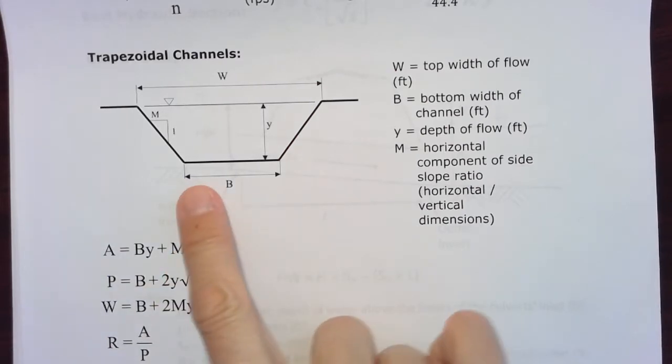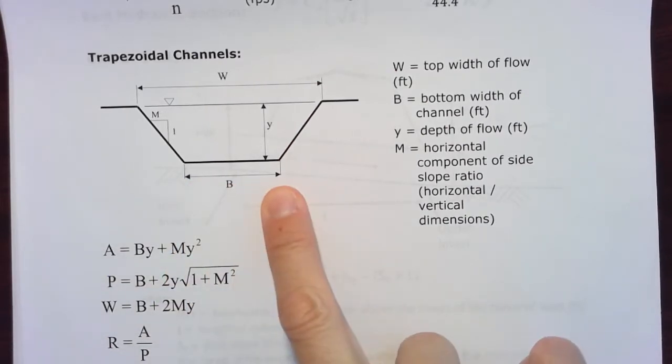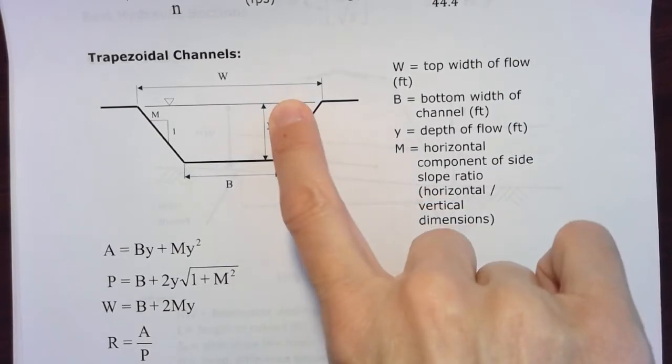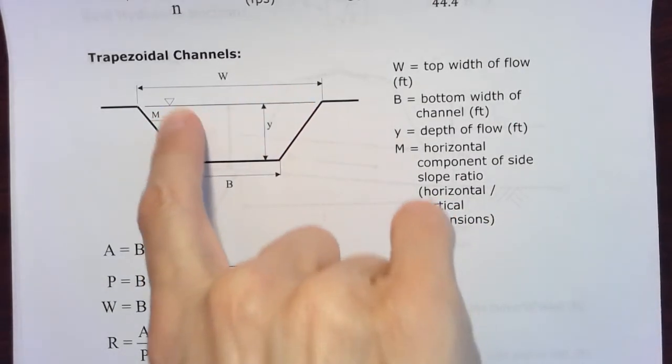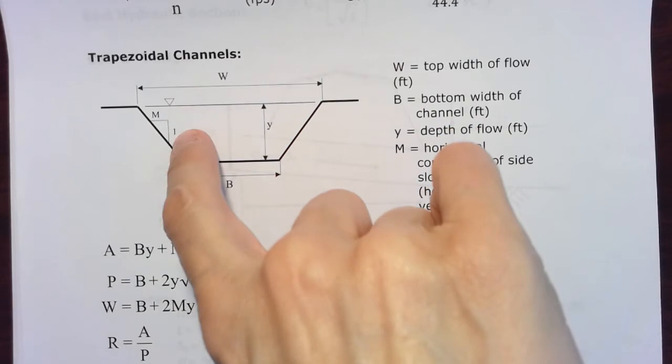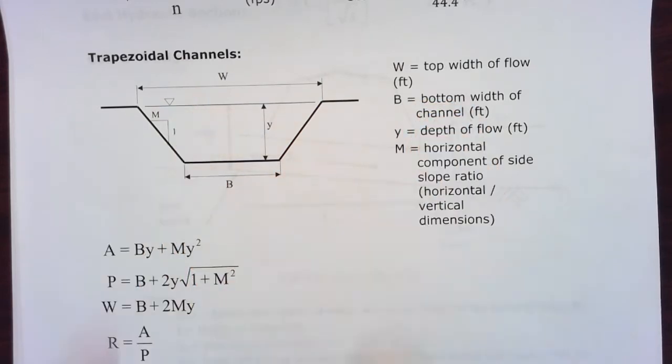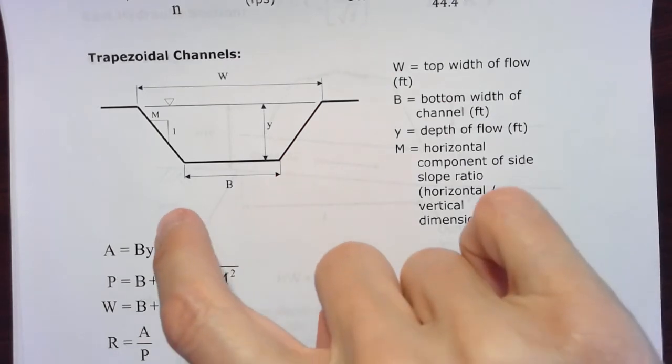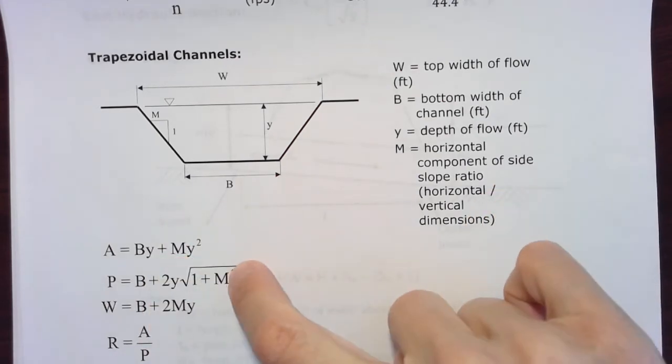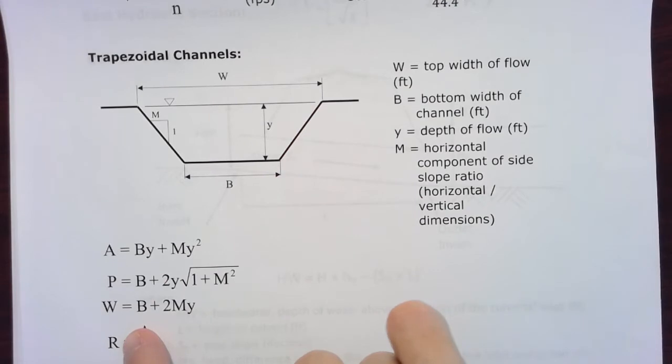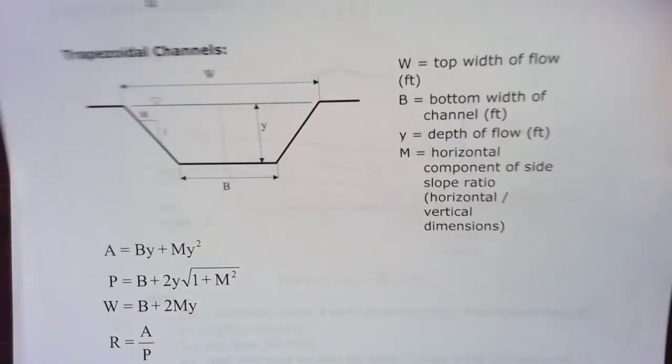When we define things, we can define the base of the channel as B, the depth of the water as Y, and this side slope horizontal component to one, that horizontal component is called capital M. Once we know those variables, we'll be able to use the formula for area, formula for wetted perimeter, and then find hydraulic radius by dividing area by wetted perimeter. That's how I'm gonna solve this problem.